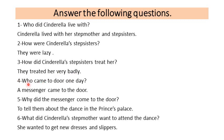Number four: Who came to the door one day to tell them about the invitation to the dance? A messenger came to the door. Number five: Why did the messenger come? To tell them about the dance at the prince's palace. Number six: What did Cinderella's stepmother want to attend the dance? She wanted to get new dresses and new slippers.